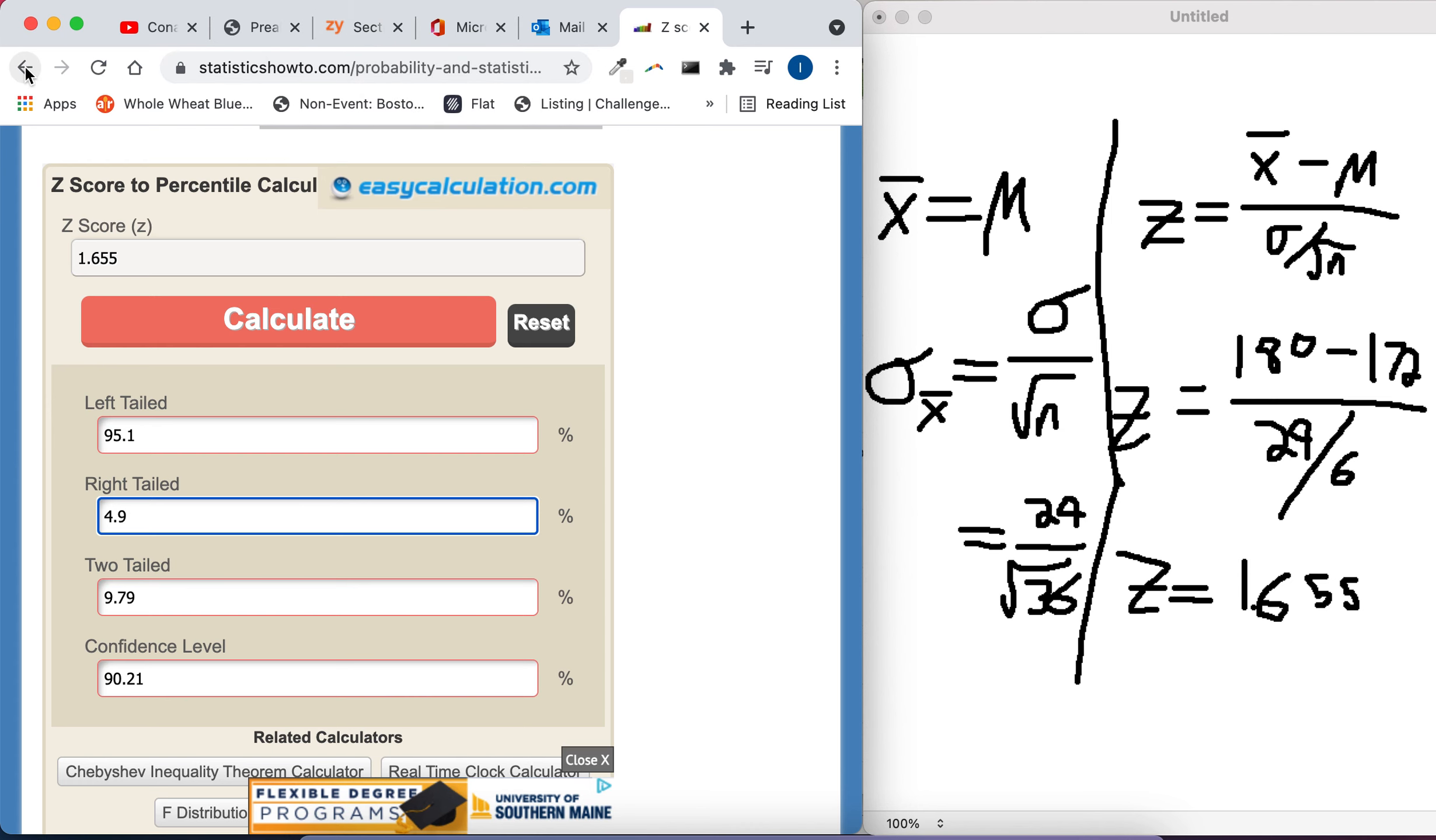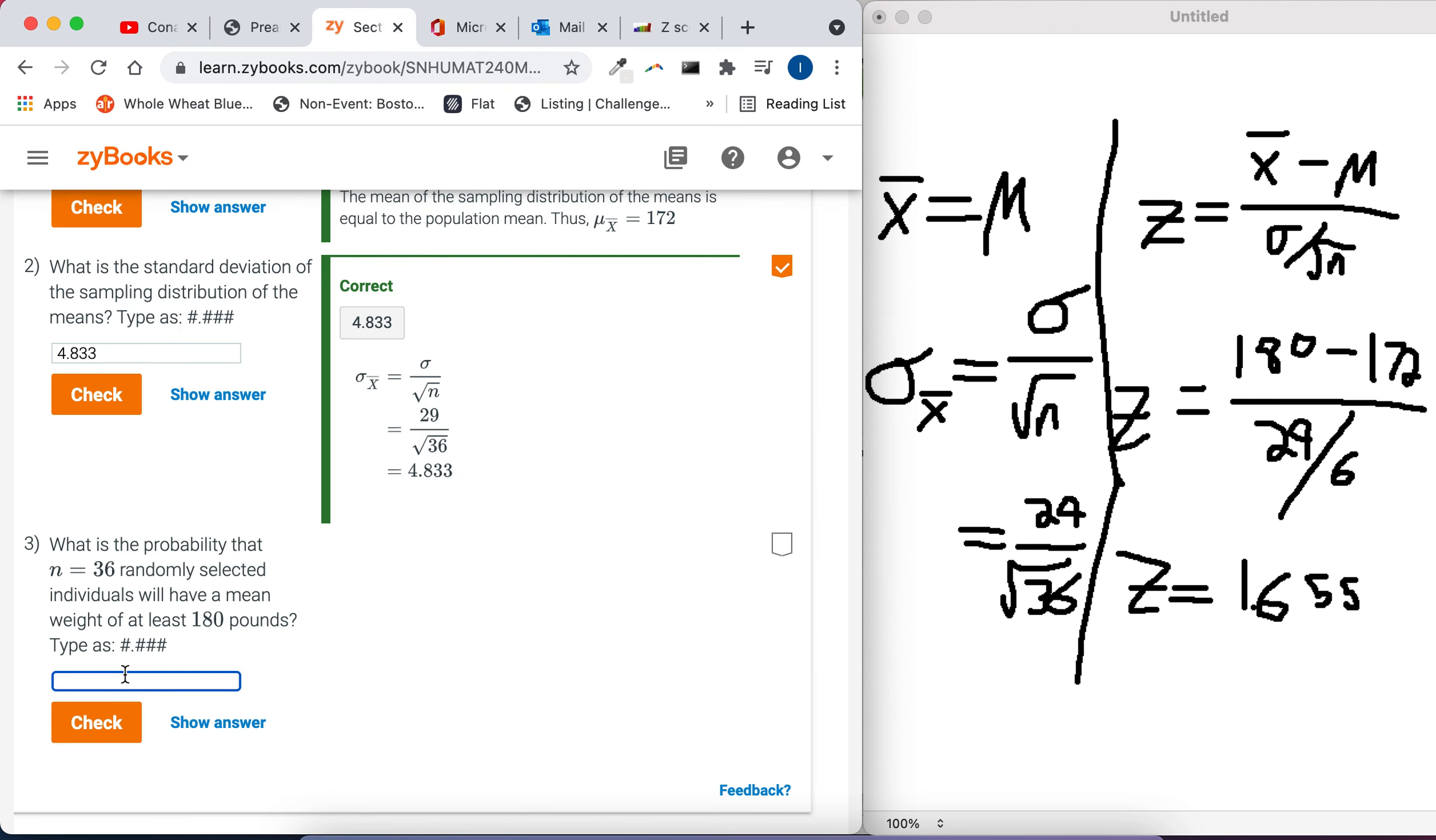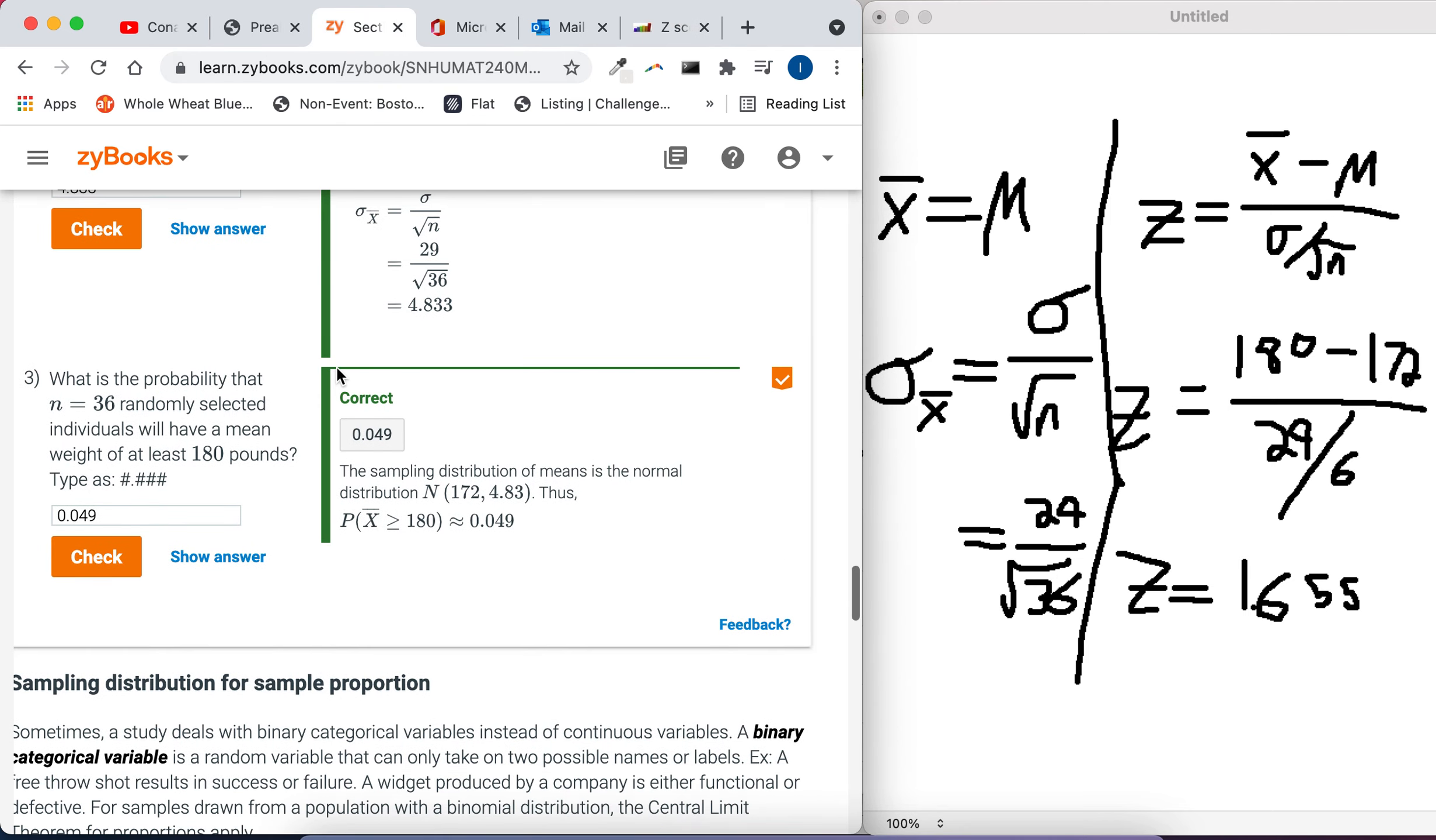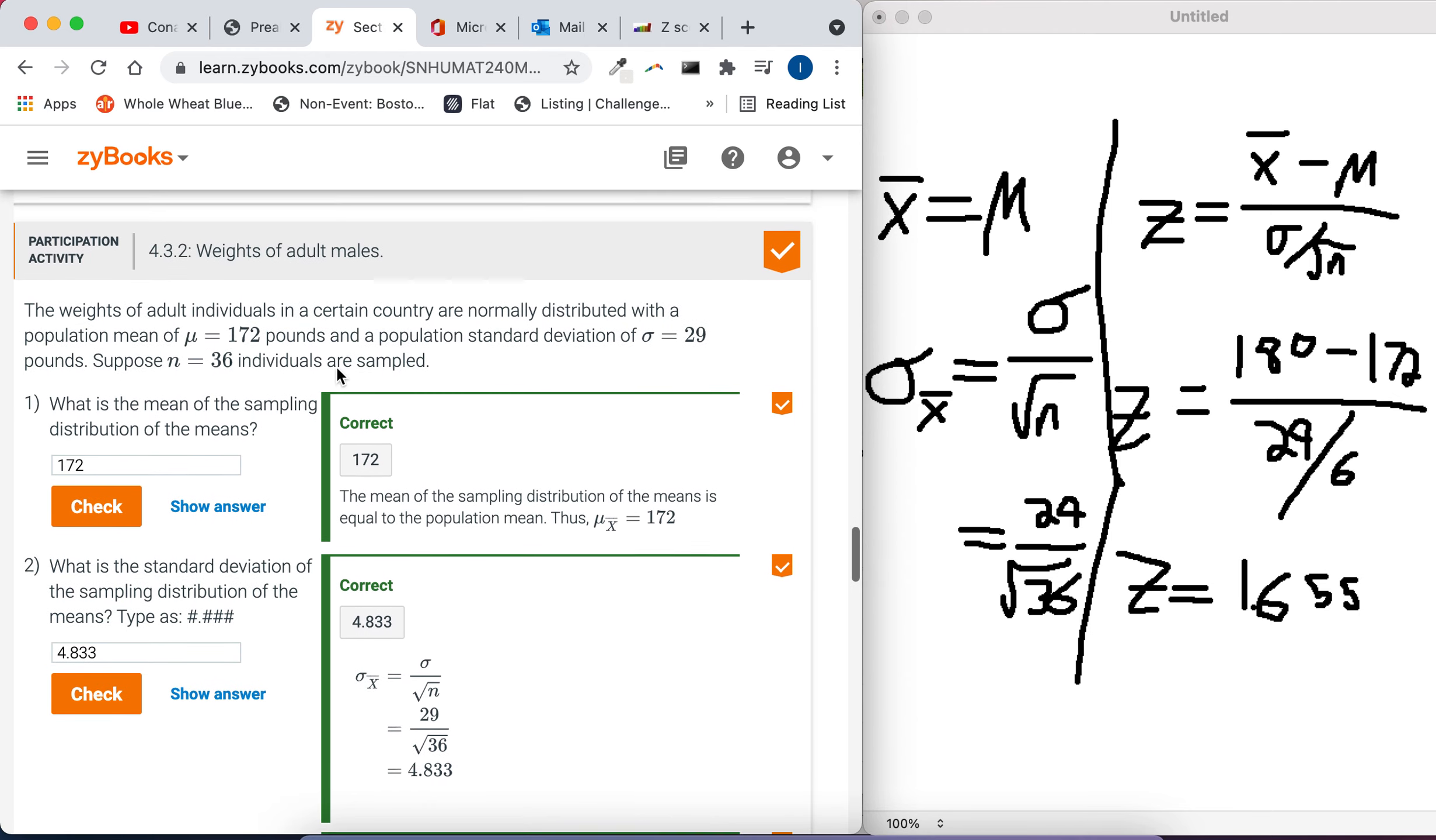Actually, here, that's exact enough for Zybooks. 4.9% is a decimal 0.049. That hits the third decimal place like we're looking for. If you need it to be more exact, though, just use one of those other calculators. Okay, so I think that's it for 4.3.2.